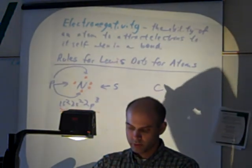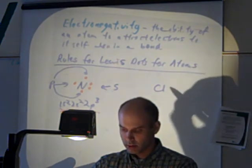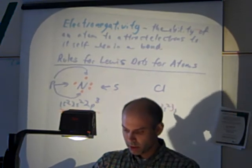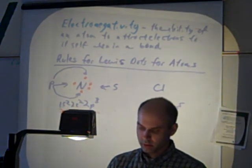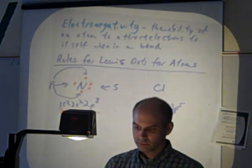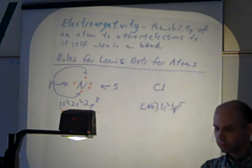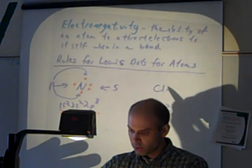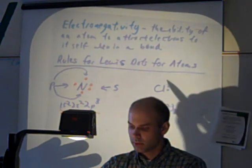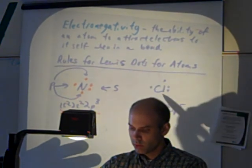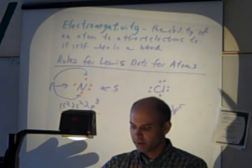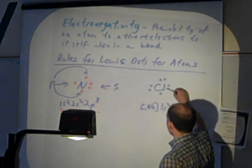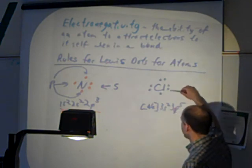Chlorine is neon 3s2 3p5. So we have two electrons there, and then one, two, three, four, five. You put your s's here, and then you go counterclockwise. You've got five p's, one, two, three, four, five.